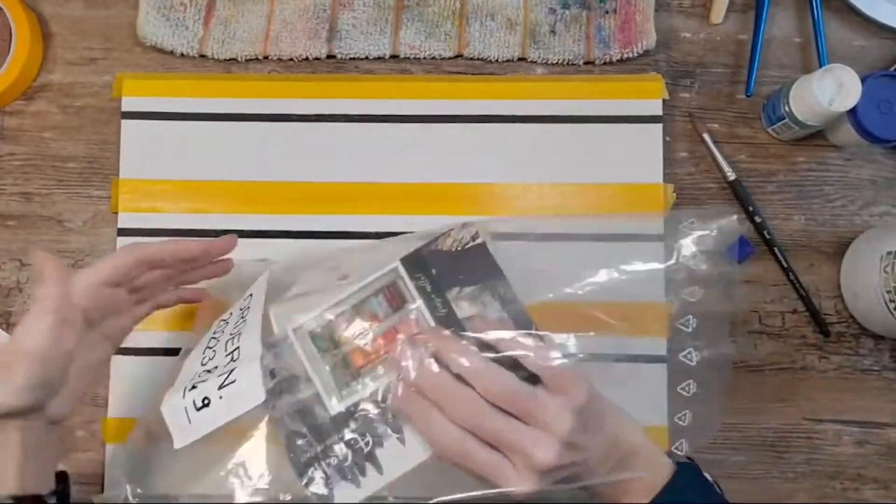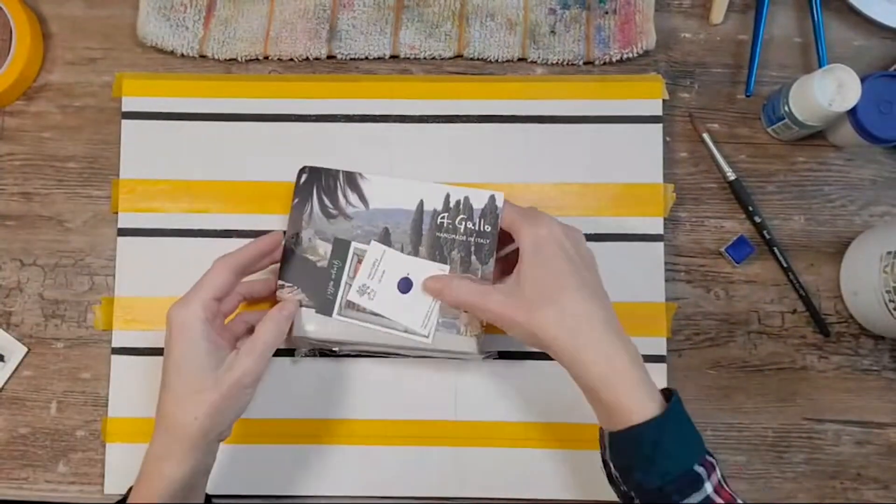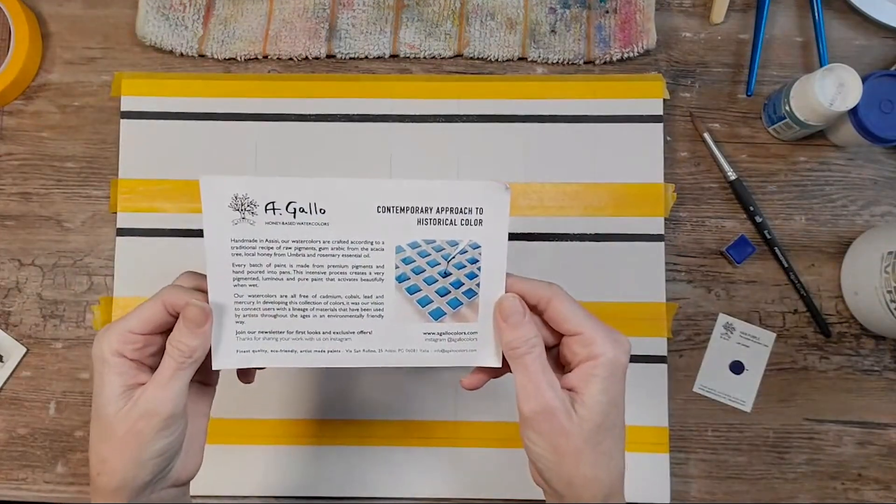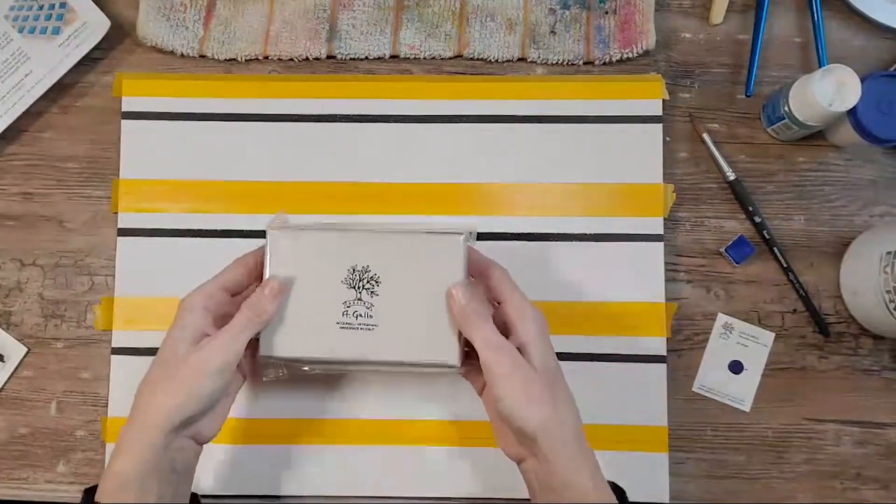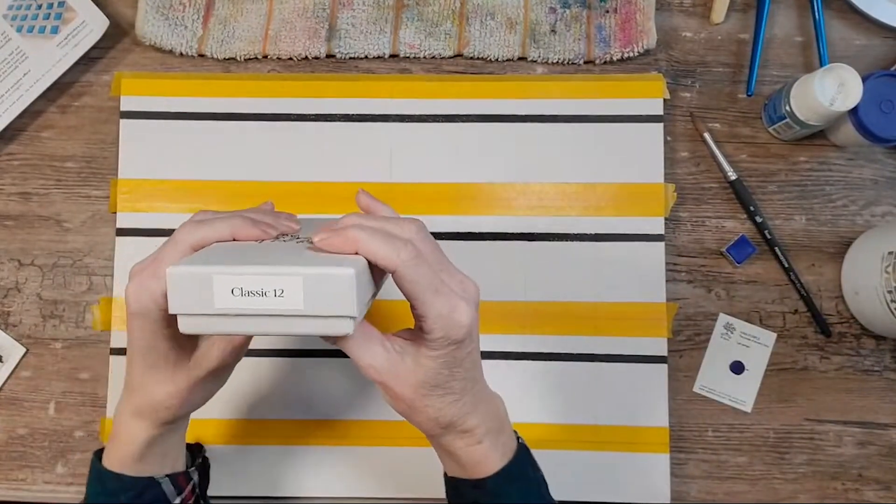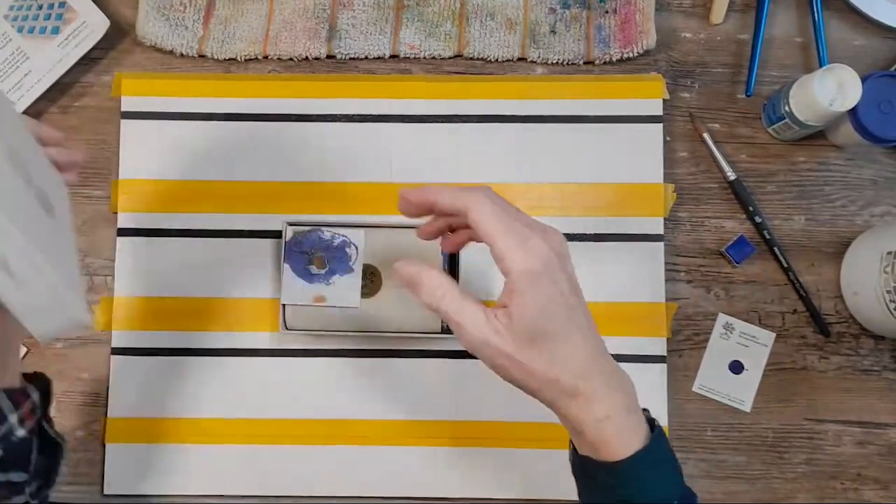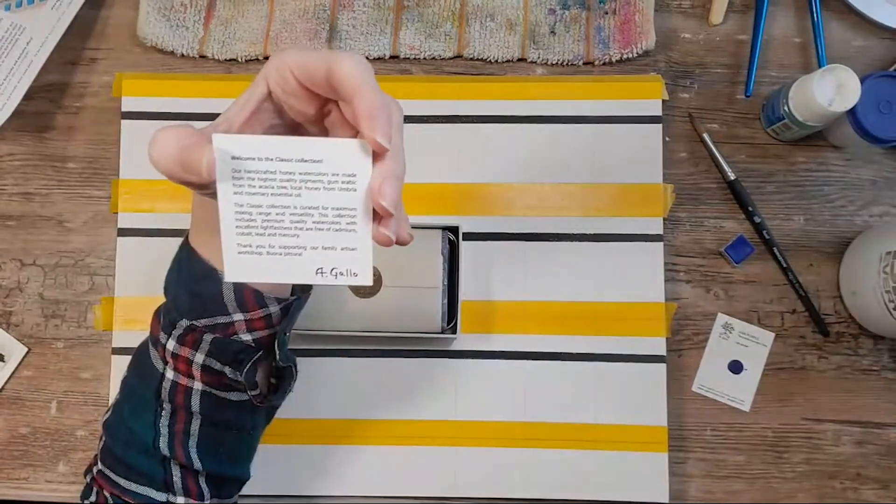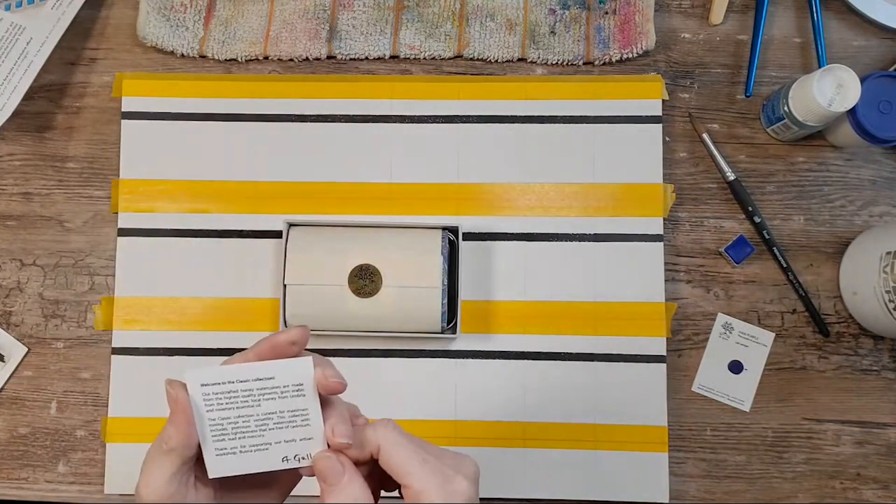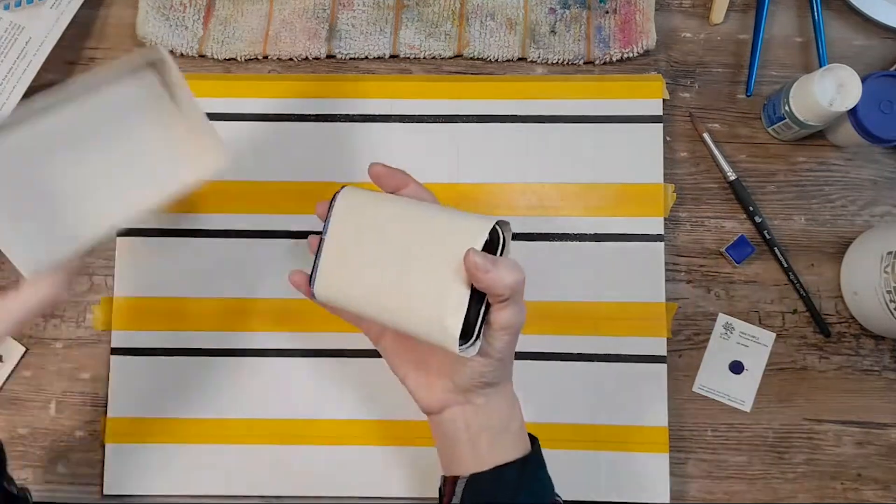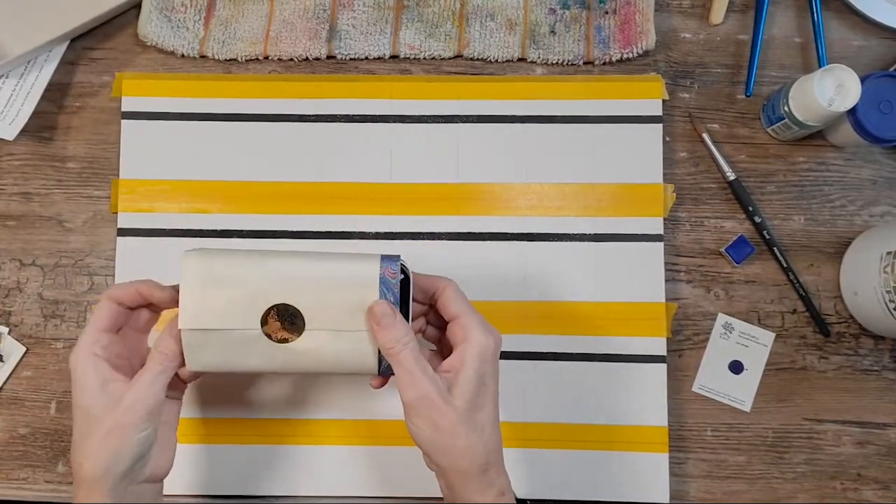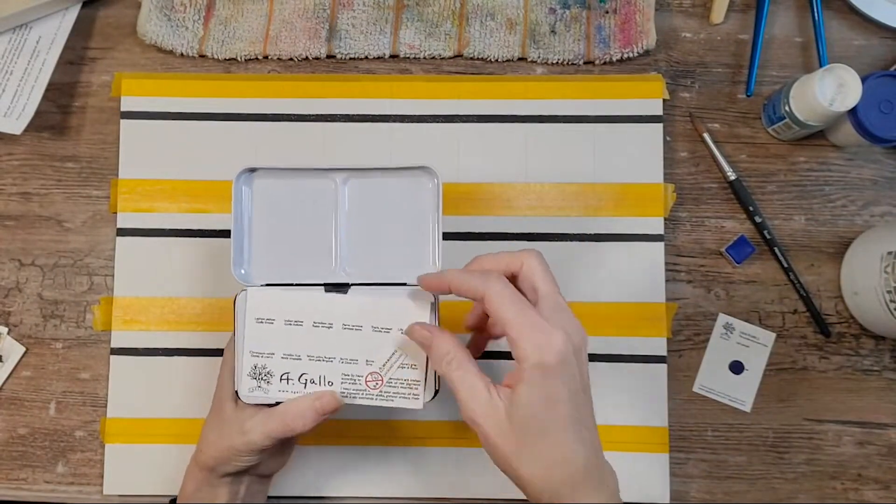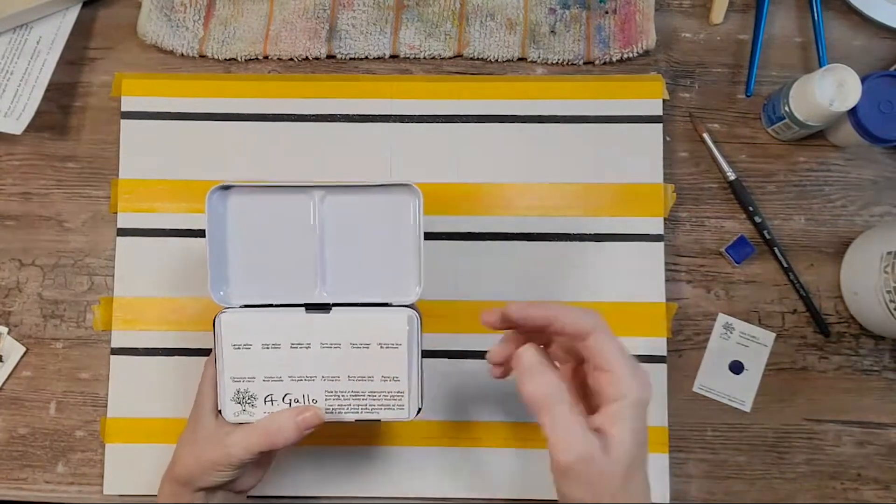Well, this is that A. Gallo set and I think I told my Patreons that I had bought this for myself, but I don't think I told anyone else. So we get a Han Purple lab sample card about their history and the goods. Oh my goodness, it's heavy. Cute little box. Okay, so I bought the classic 12 half pan set from them. Welcome to the classic collection, maximum mixing range and versatility. Free of cadmium, cobalt, lead and mercury. They do have gum arabic, kasha tree and honey and rosemary. Their typical beautiful packaging.